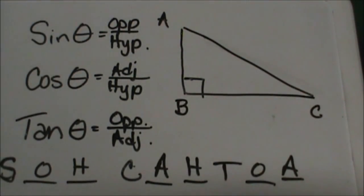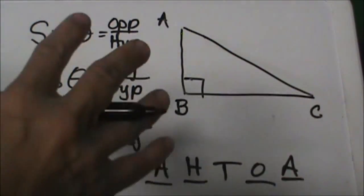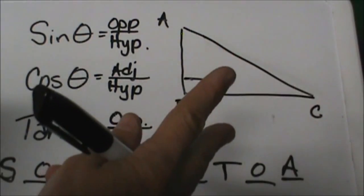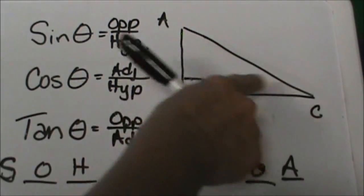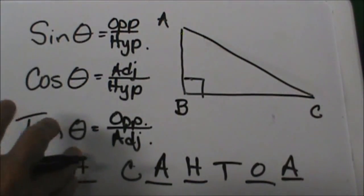So when do we use these? We use these three trig functions when we don't have special right triangles. You just learned 45-45-90s and 30-60-90s, so when you don't have those special angles at the acute angles, then you're going to use your trig functions.